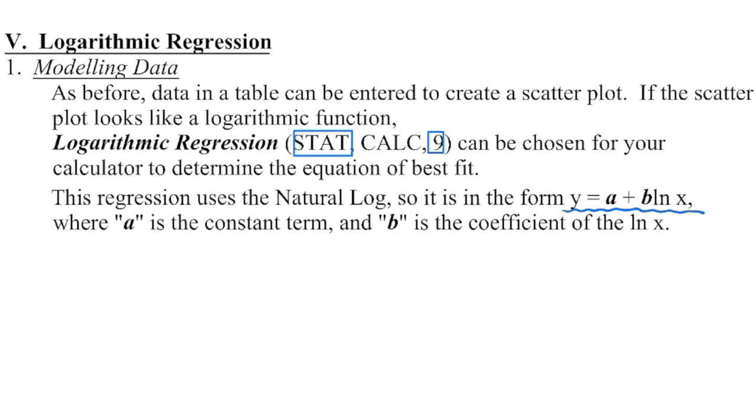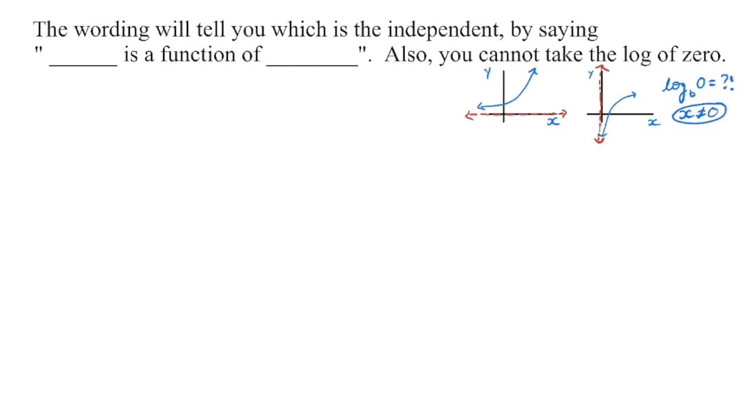We're going to enter the data, go into stat, arrow over to calculate, and this time you're going to go down and choose number nine, which is logarithmic regression. You're going to notice it uses the natural log. So when they generate that equation for you, it's always going to be in this form. Now, A is the constant term, the one without a variable attached, B is going to be your leading coefficient.